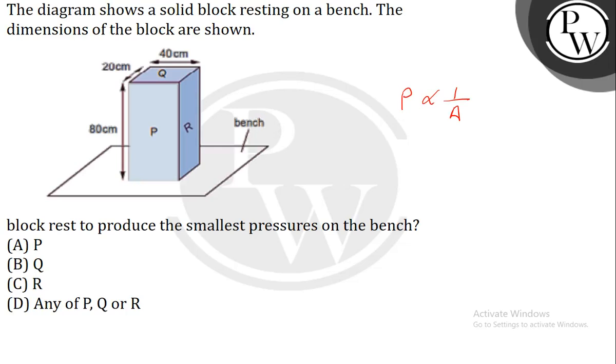The diagram shows a solid block resting on a bench. The dimensions of the block are shown. To produce the smallest pressure on the bench, we know that pressure is inversely proportional to the area. So to make the pressure the smallest, the area should be the maximum.